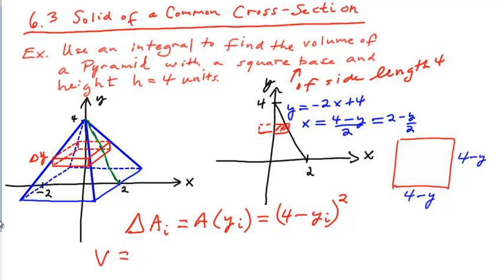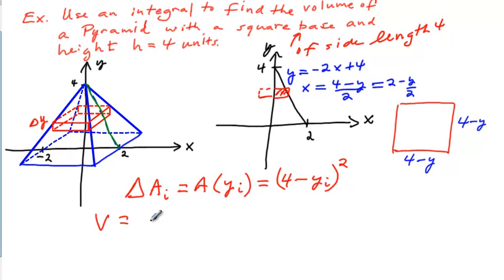Let's move down a little bit. So we're going to end up with the integral from, let's see, y goes from bottom to top of the pyramid, 0 to 4. And we're integrating a of y sub i, which in this case is 4 minus y quantity squared, dy.